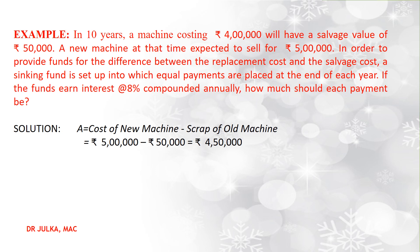In this example, the funds required in the future is the difference between the cost of the new machine and the scrap value of the old machine. Cost of new machine is 5 lakh and the scrap of old machine is Rs 50,000, so the difference is Rs 4 lakh 50,000 — this is the amount required in the future to replace the machine. The interest rate is 8% compounded annually, so i = 0.08. We set up the fund for 10 years, so n = 10, and we need to find r, the amount to be placed at the end of each year.